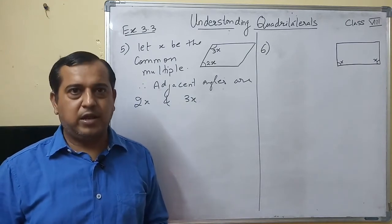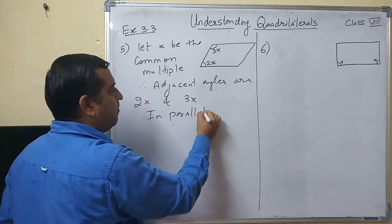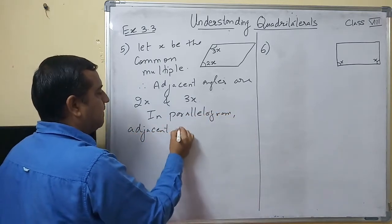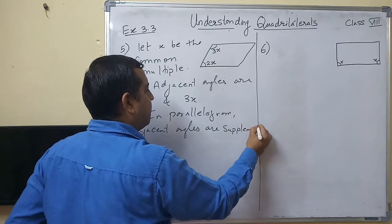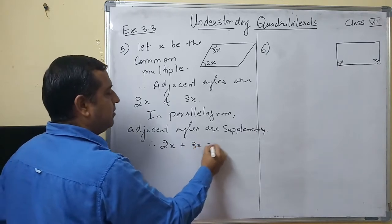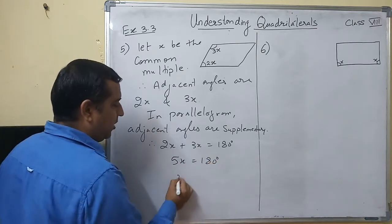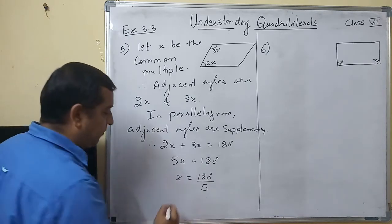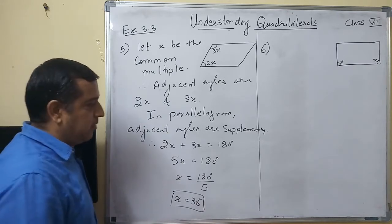We need to find the value of these angles. Now, in a parallelogram, adjacent angles are supplementary, meaning their addition is 180 degrees. This gives us 2x plus 3x equals 5x equal to 180 degrees, and this gives x equal to 180 divided by 5, which gives x equal to 36 degrees. But we need to find the angles, not just x.